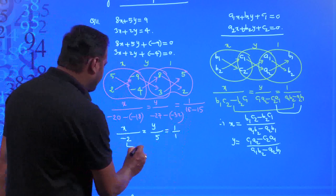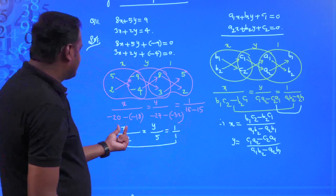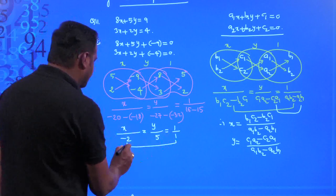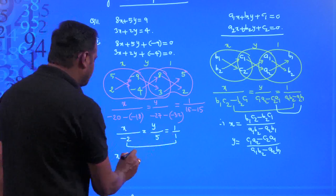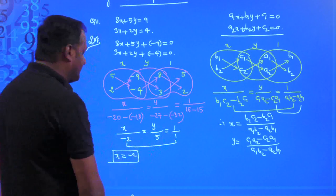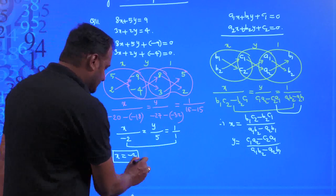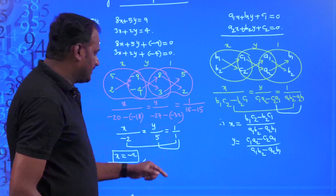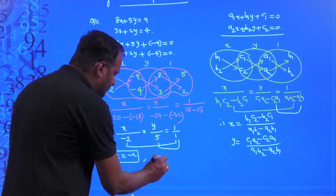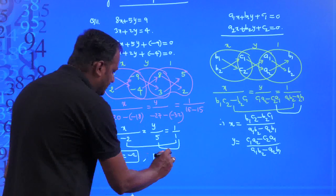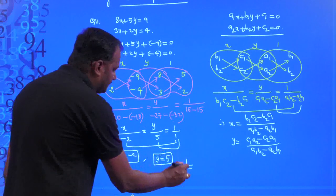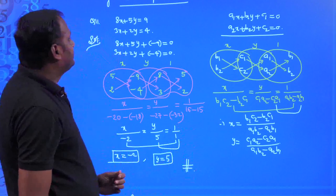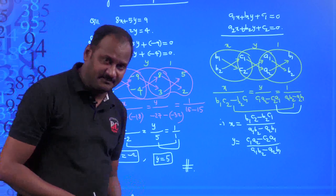To get x: x/(−2) = 1/1, so x = −2. To get y: y/5 = 1/1, so y = 5. This way we can find the solutions of a pair of linear equations by the cross-multiplication method.